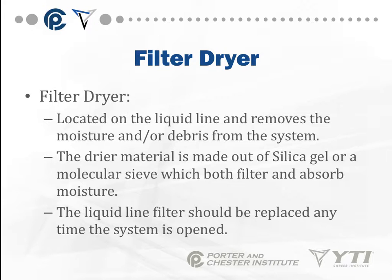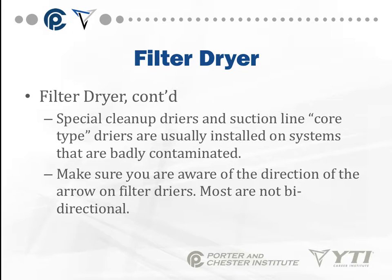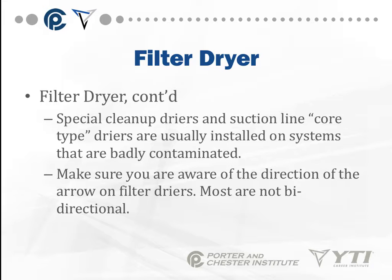We also have a filter dryer located on the liquid line, which removes moisture and any debris from the system. The dryer material is made of silica gel or a molecular sieve, which both filters and absorbs moisture. The liquid line filter should be replaced any time a system is opened — any time you recover refrigerant, braze, or fix leaks, replace the filter dryer. There are also special cleanup dryers and suction line core-type dryers for badly contaminated systems. Check the directional arrows on filter dryers — most are not bi-directional; the arrow should point away from the condenser, toward the evaporator with the flow of refrigerant.